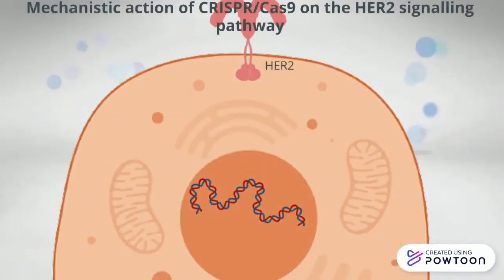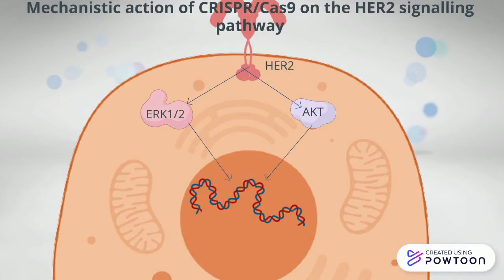Protein kinase B and mitogen-activated protein kinase are serine-threonine kinase proteins involved in signal transduction pathways in several cellular processes. HER2, ERK1 and 2, and AKT protein are involved in the HER2 signaling pathway.